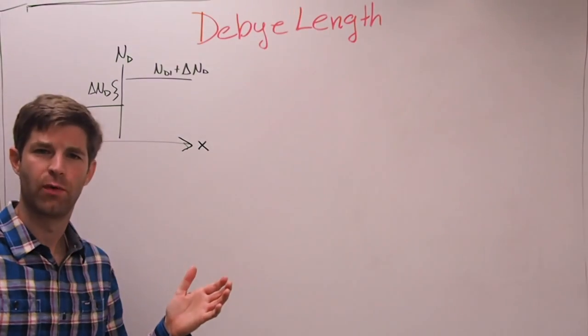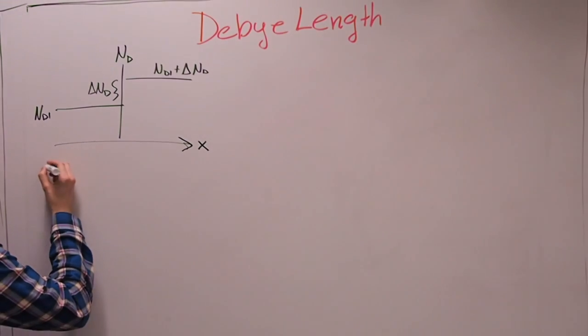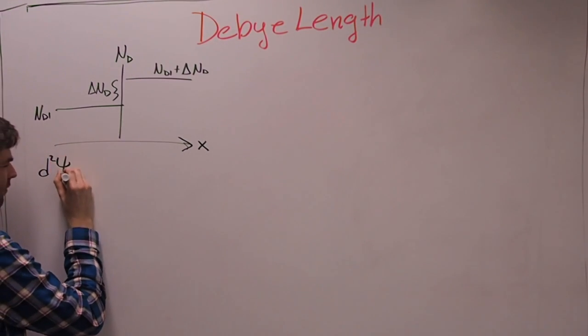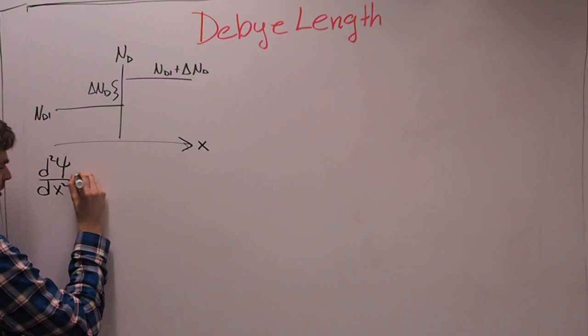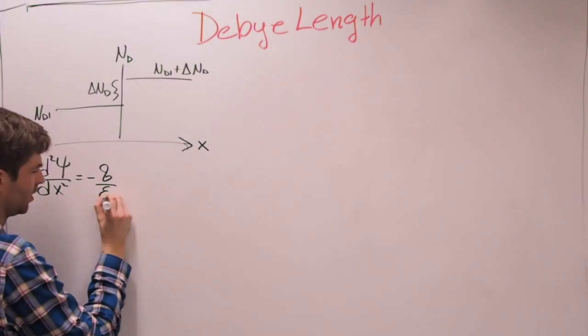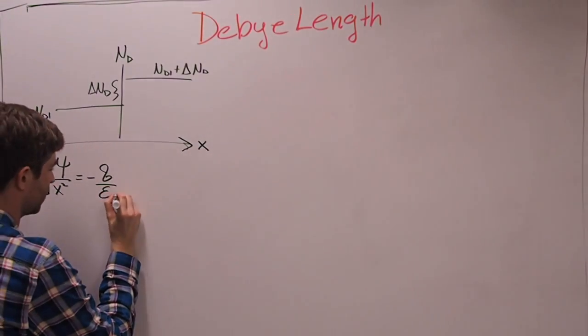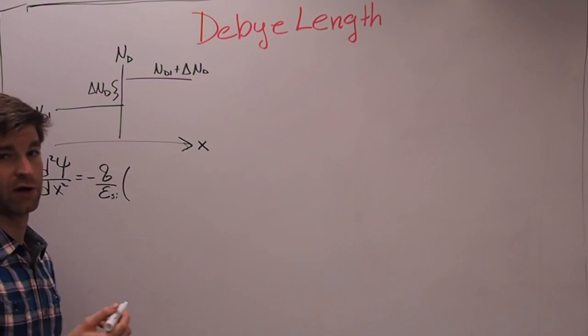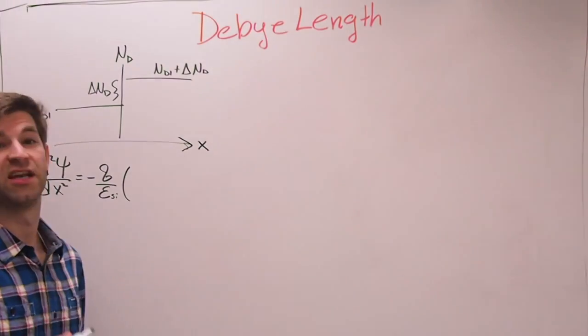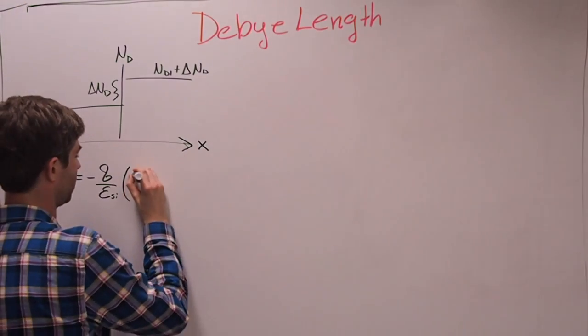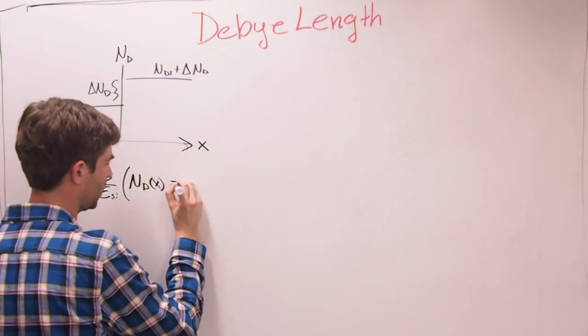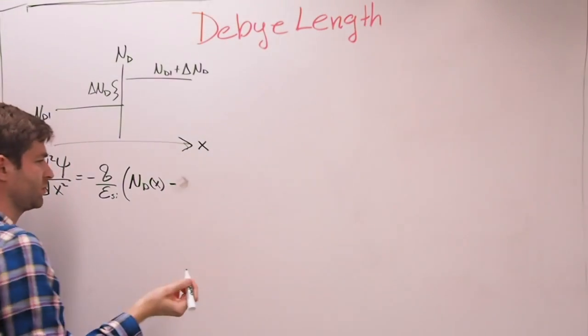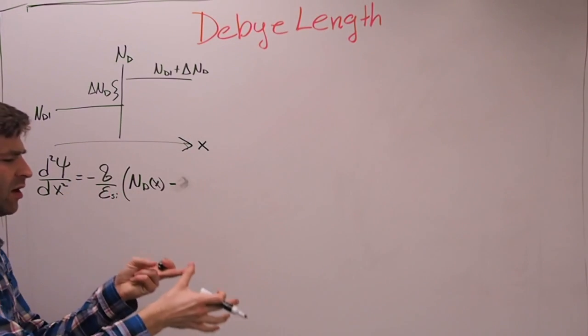So we can use the Poisson equation in this instance, which is, in this case, D squared phi over Dx squared is equal to the negative charge Q over the permittivity of the material, which is, in this case, silicon, times our net charges in there, which is going to be the positive charges minus the negative charges.